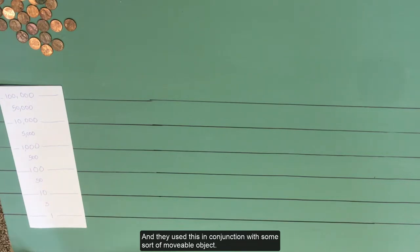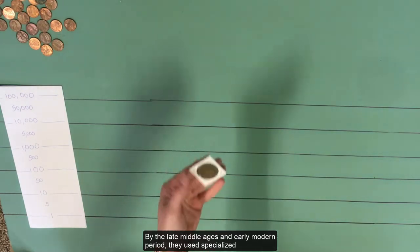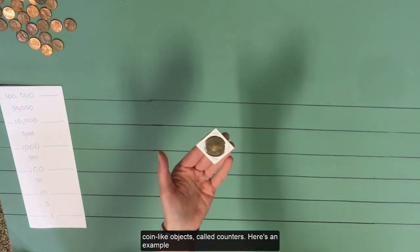And they use this in conjunction with some sort of movable object. In earlier time periods, it would be something like a pebble. By the late Middle Ages and early modern period, they used specialized coin-like objects called counters.